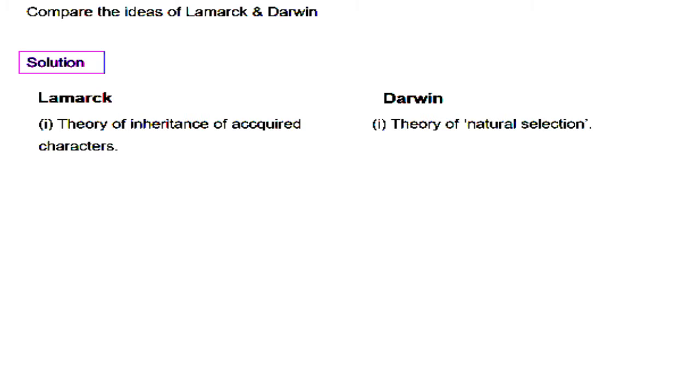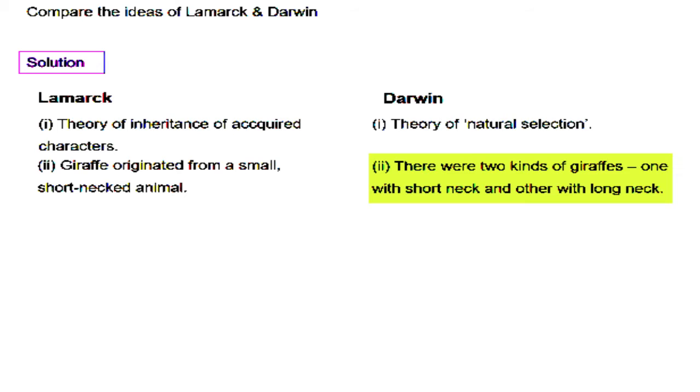Theory of acquired characters versus the theory of natural selection. The second difference is the development or the origin of the giraffe, which both of them had given different reasons for. Lamarck said that giraffe originated from a small short-necked animal, as we discussed in earlier videos.